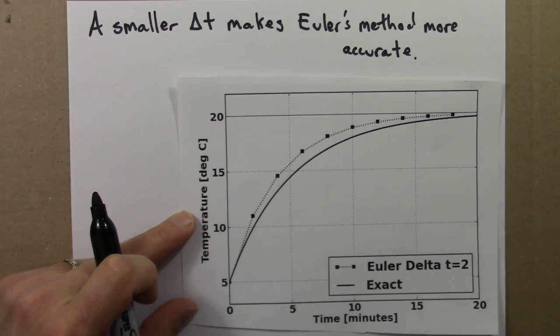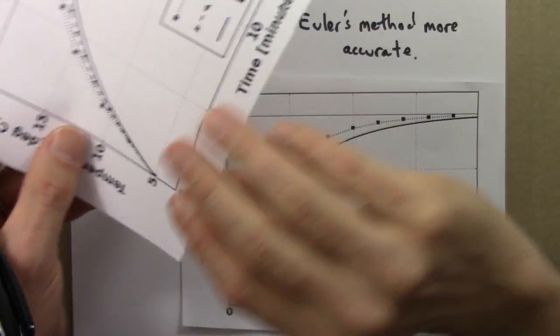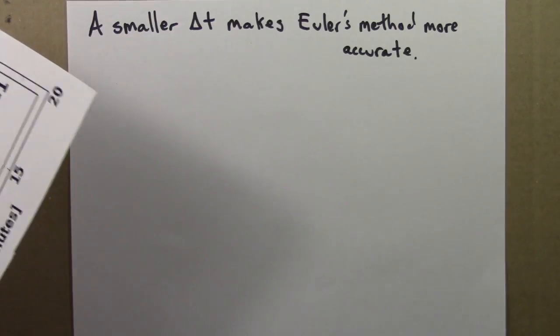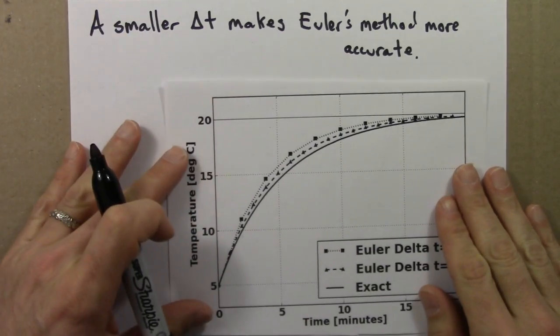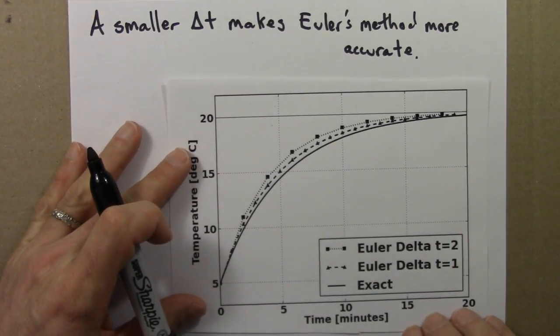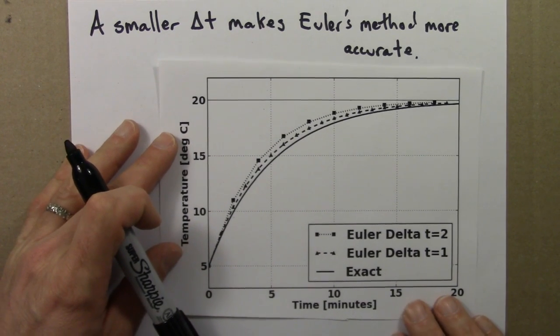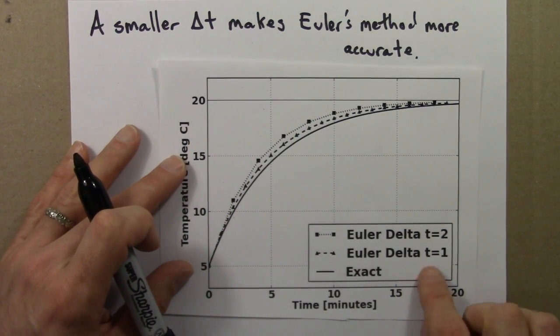And I can illustrate that on this next plot. So I won't go through all the numerics of this, but here is Euler's method for two different delta t's.